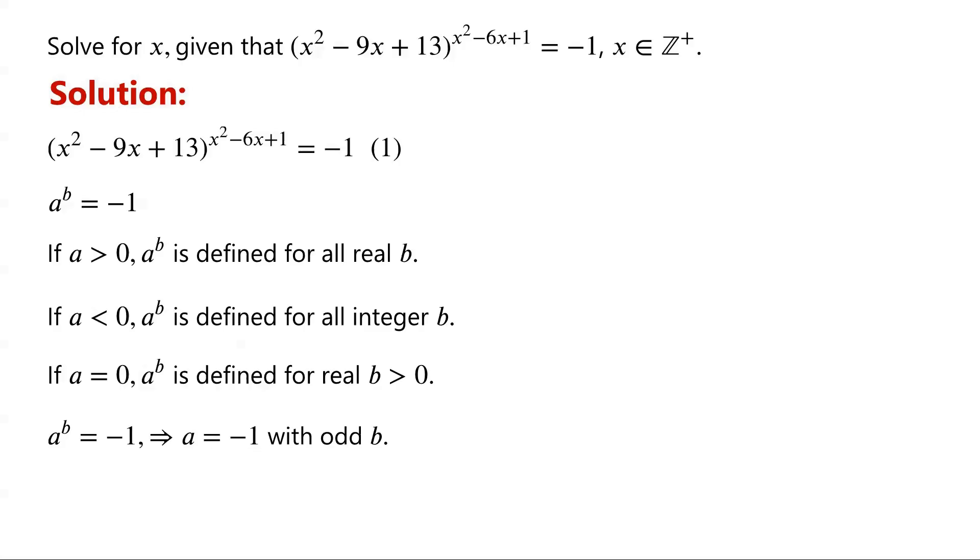So, solving equation 1 is equivalent to solving a system of equations: x squared minus 9x plus 13 equals negative 1, and x squared minus 6x plus 1 equals 2k plus 1, where k is an integer. We label them as equations 2 and 3 respectively.